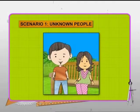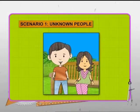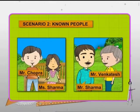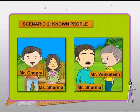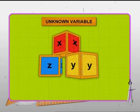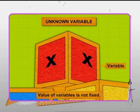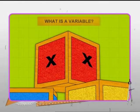Let's see how to express a quantity whose value is changing and not fixed. For example, when we meet somebody unknown, we address them as Mr. or Mrs. But then we get to know them better, we refer to them by their names, like Mr. Chopra, Mr. Sharma or Mr. Venkatesh. So when we don't know their names, we use the word Mr. as a variable. Likewise, when we don't know the exact number, we use an alphabet such as X or Y as a placeholder for an unknown number. This unknown number is called a variable. Variable means something that can vary or change.